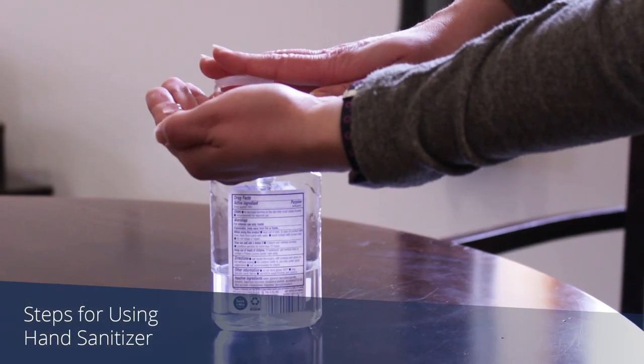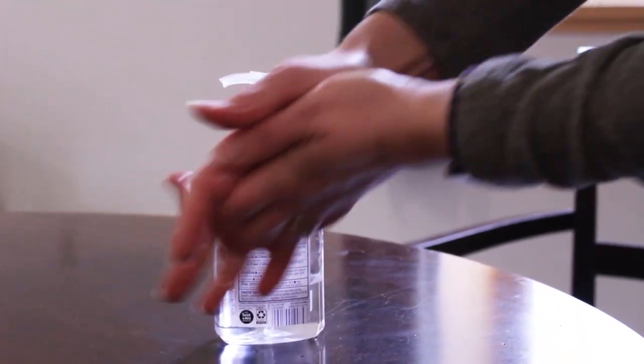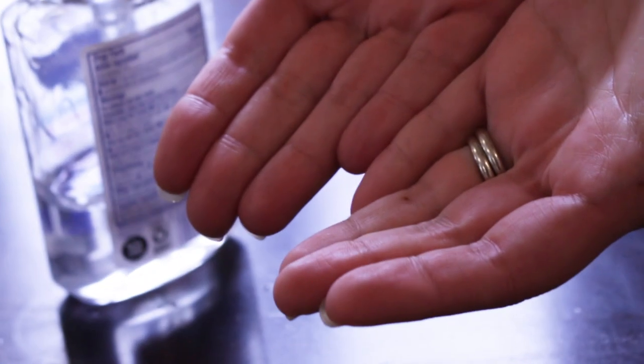Apply the gel product to the palm of one hand. Read the label to learn the correct amount. Rub your hands together. Rub the gel over all the surfaces of your hands and fingers until your hands are dry. This should take around 20 seconds.